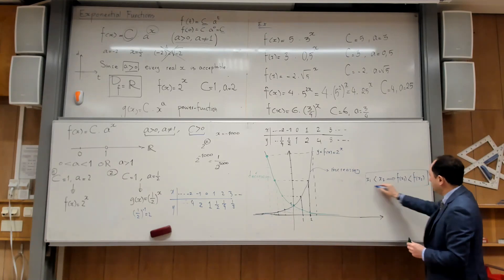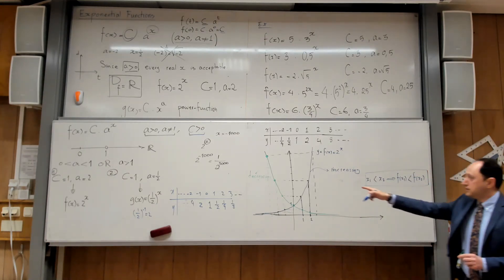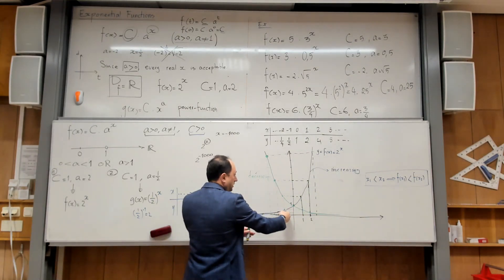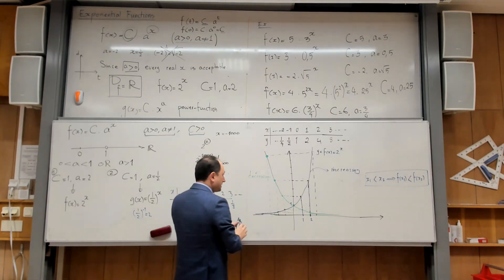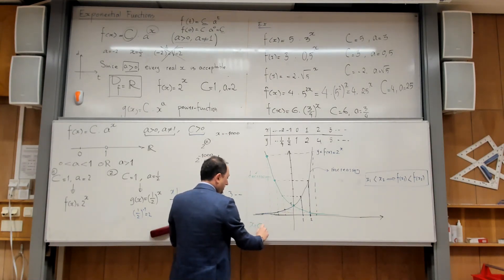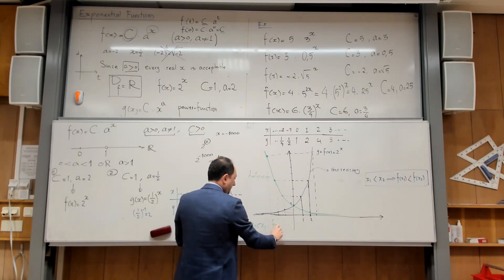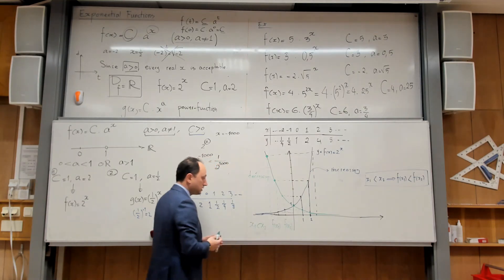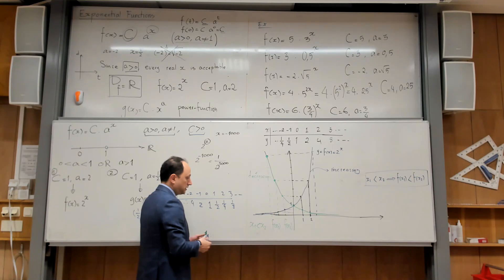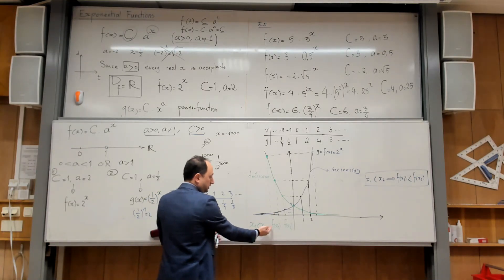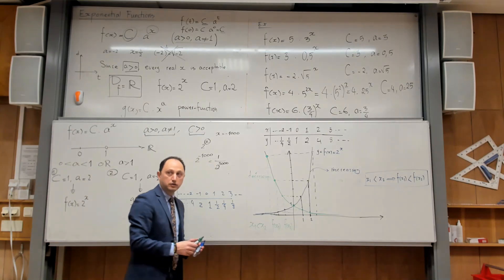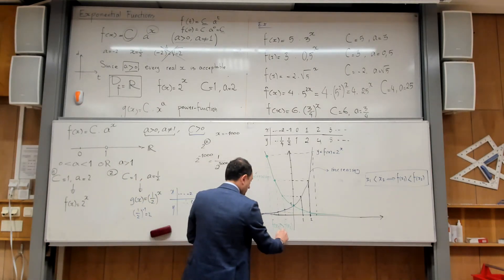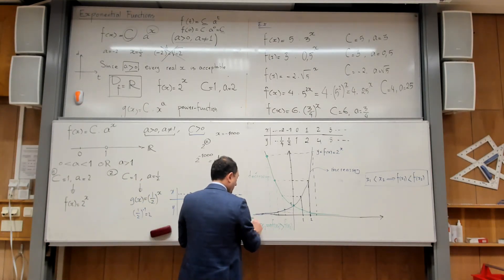In the decreasing scenario, when I go to the right, the height becomes smaller and smaller. So if x1 is less than x2, then f of x1 is greater than f of x2 for a decreasing function. This is the mathematical definition of a decreasing function.